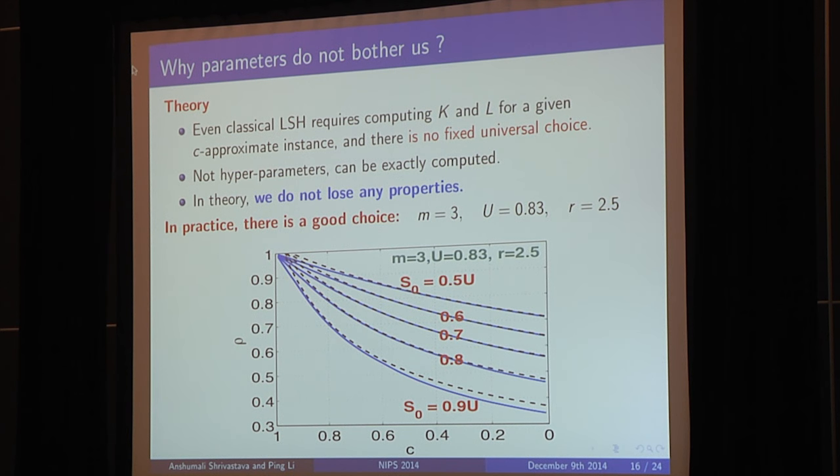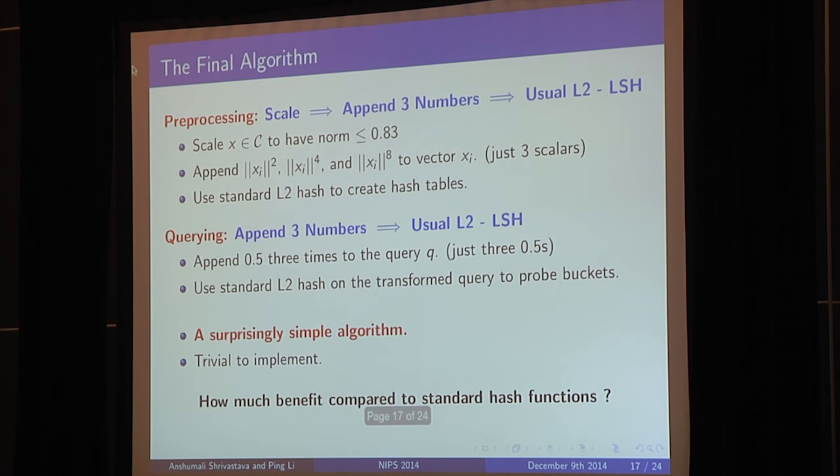And, what about in practice? Well, in practice there is a good choice. So in the plot here, the bold lines are the optimal running time guarantee with different approximation ratio and different thresholds. And the dotted lines are the running time guarantee with this fixed choice of the parameters that I have introduced. And so this is the parameters that we are going to use everywhere in all the experiments, irrespective of the data set and threshold. And this is what we recommend. So here is how the final algorithm looks like. You scale the data to make it norm less than 0.83. You append three norms, that is just three numbers, and use standard L2 LSH. While querying, you just append three halves and use standard L2 LSH. And that is it. It's a surprisingly simple algorithm. It's probably two, three line of code change to implement.